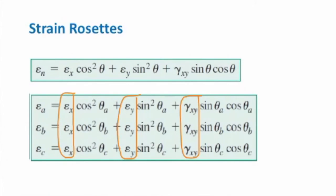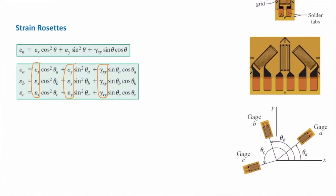and gamma xy. If I repeat that for gauge b and gauge c, I will come up with a set of system of equations, three equations, three unknowns, which I can solve that for epsilon x, epsilon y, and gamma xy. All right? Let me quickly solve a problem. There is just one important trick about solving this kind of problem. The rest of that is easy.